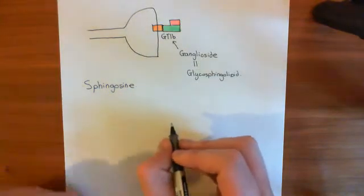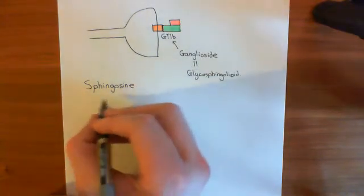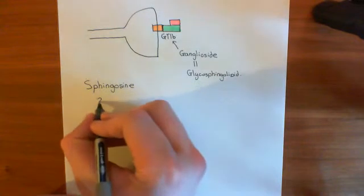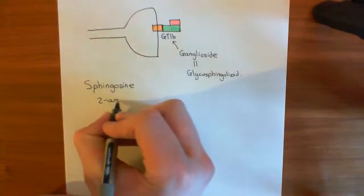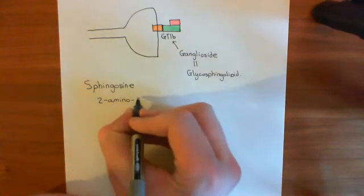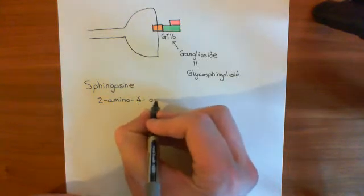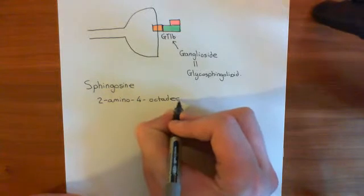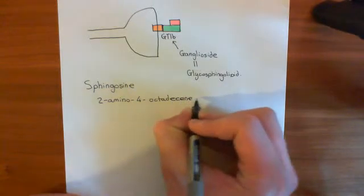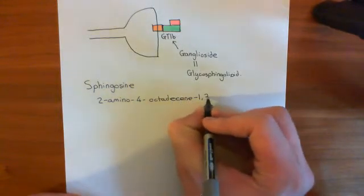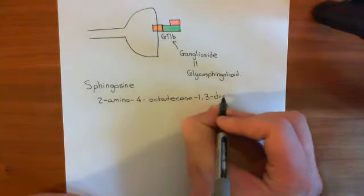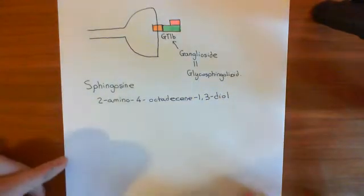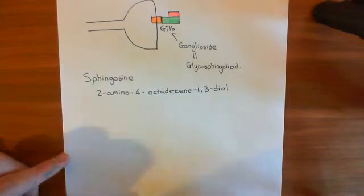The proper name, or chemical name, for sphingosine is 2-amino-4-octadecine-1,3-diol. Sphingosine might sound cooler than 2-amino-4-octadecine-1,3-diol, but the nice thing about this name that chemists came up with is that it tells you exactly what the structure of this molecule is.